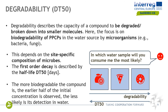The more biodegradable the compound, the earlier half of the initial concentration is observed degraded. This means that the smaller the DT50 value, the greater the degradability of the compound.